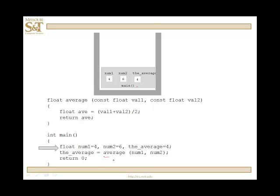Now when I get to the function call for average, what happens is we push another plate onto the stack. Another function goes onto the stack, and the compiler can only see the variables at the top. Now the variables num1, num2, and the average are invisible.